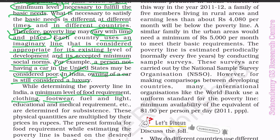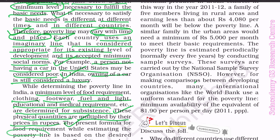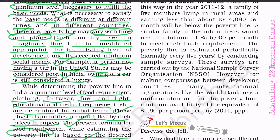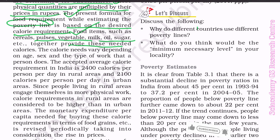While determining the poverty line in India, a minimum level of food requirement, clothing, footwear, fuel and light, educational and medical requirements, etc. are determined for subsistence. These physical quantities are multiplied by their prices in rupees. The present formula for food requirement while estimating the poverty line is based on the desired calorie requirement. Food items such as cereals, pulses, vegetables, milk, oil, sugar, etc. together provide these needed calories. The calorie needs vary depending on age, sex, and the type of work a person does.